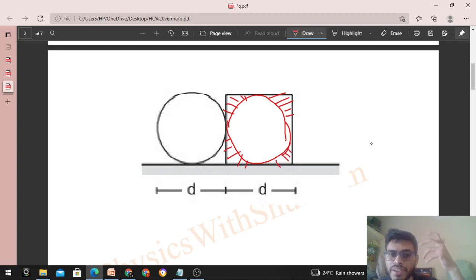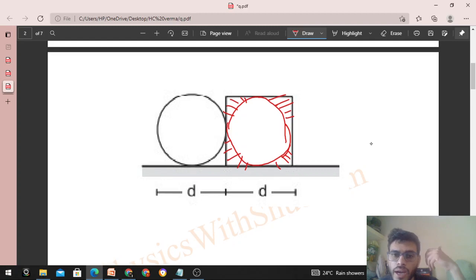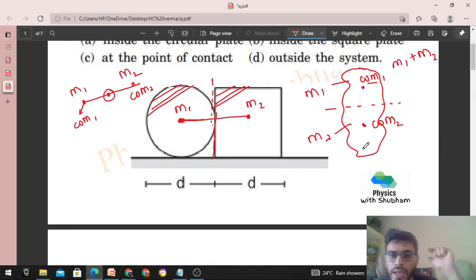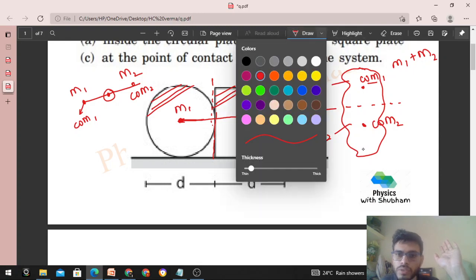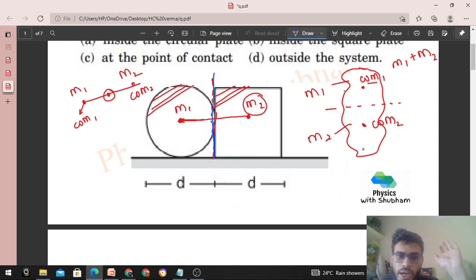So square ka area is greater than area of the circle. So agar area of square is greater than m2 will be greater. Joh mass hai square plate ka woh zyada hooga. Ab agar iska mass zyada hai to center of mass kis ke nezdik hooga - m2 ke nezdik, means center se. Yeh iska center. Agar dohno mass same hoote to center pe lie karta. Agar m2 zyada hai to center se m2 ke taraf lie karega, means kahan pe aagaya.